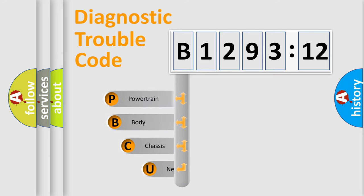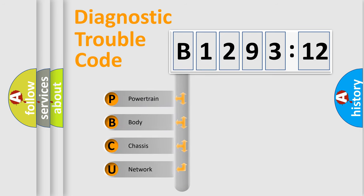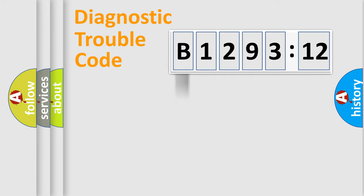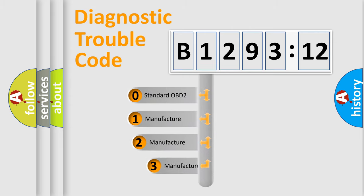First, let's look at the history of diagnostic fault code composition according to the OBD2 protocol, which is unified for all automakers since 2000. We divide the electric system of the automobile into four basic units: Powertrain, Body, Chassis, and Network. This distribution is defined in the first character of the code.